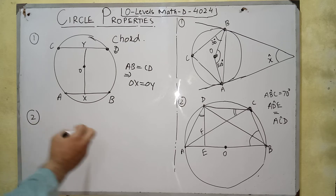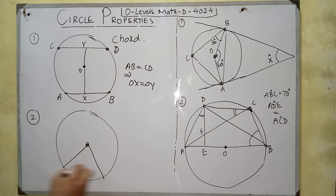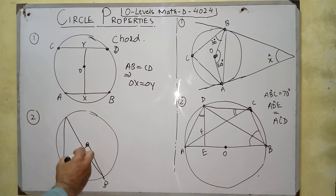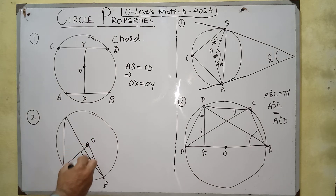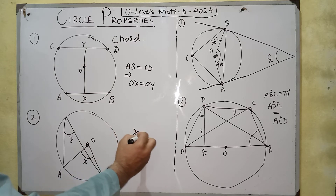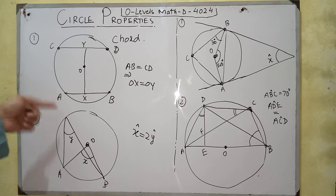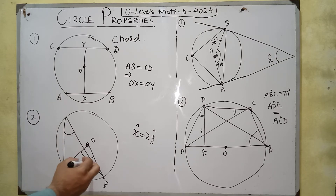The second property involves arc length. The part of the circumference of a circle is called an arc. If arc AB subtends an angle X at the center of the circle, and an angle Y at the circumference of the circle, the relationship between them is that X equals 2Y. The angle subtended by an arc at the center is double the angle subtended by the same arc at the circumference.